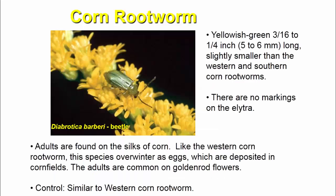Next is Diabrotica Barberi Beetle. It is yellowish-green, 3/16 to 1/4 inch (5 to 6 mm) long, slightly smaller than the western and southern corn rootworms. There are no markings on the elytra. Adults are found on the silk of corn.